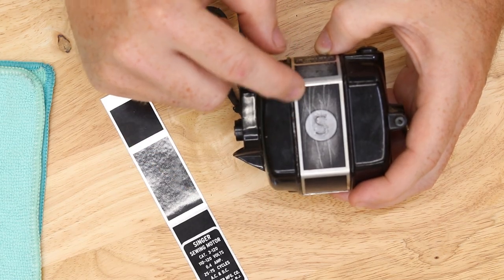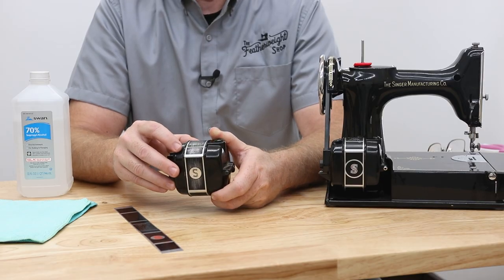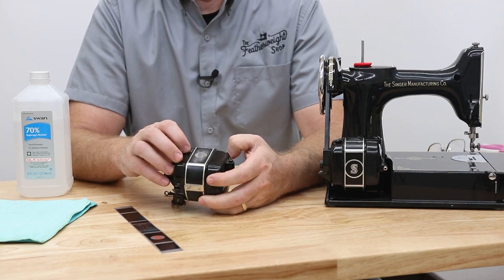Specifically, what do you do when the band is scratched up a bit, which is probably from putting the machine in the case, or sometimes the motor band is dull from harsh cleaners being used.